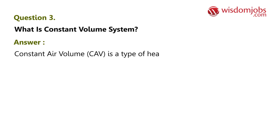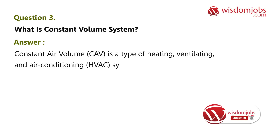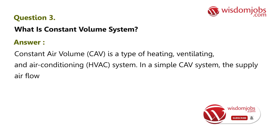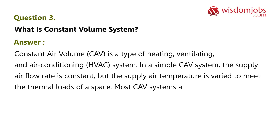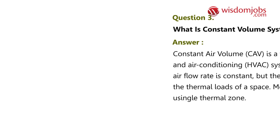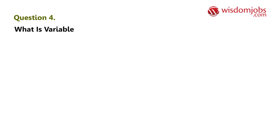Question 3: What is a constant volume system? Answer: Constant air volume (CAV) is a type of heating, ventilating, and air conditioning (HVAC) system. In a simple CAV system, the supply air flow rate is constant but the supply air temperature is varied to meet the thermal loads of a space. Most CAV systems are small and serve a single thermal zone.